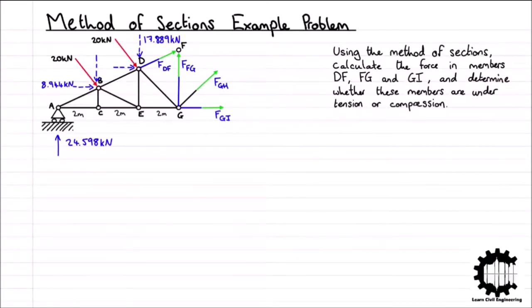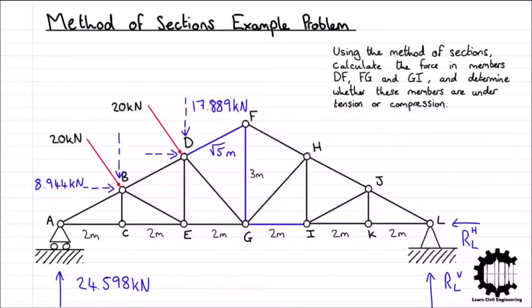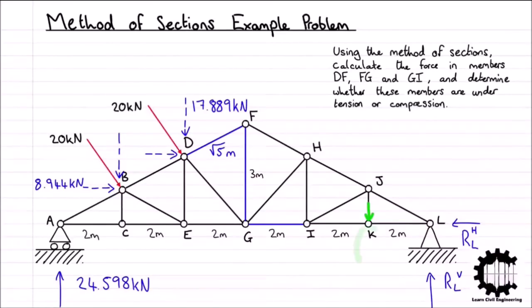Before summing moments about any nodes, we will identify members with zero internal force by inspection, temporarily considering the entire structure. At node K, a tensile force in member KL must be balanced by an equal and opposite force in member IK. However, if there were a tensile force in member JK, there are no other members attached to node K to balance it, so the internal force in member JK must have a magnitude of zero.